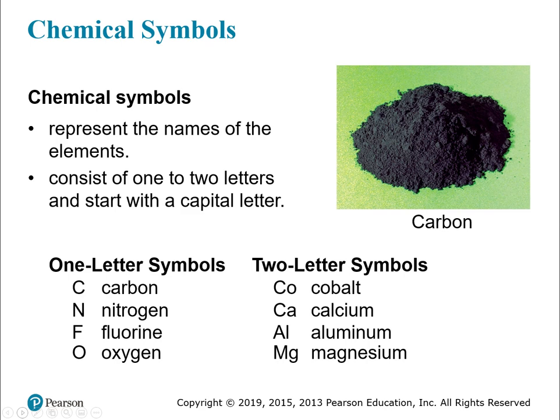The chemical symbols represent the names of the elements and there's either a one-letter or a two-letter symbol. In either case, the first letter is going to be capitalized. If there are two letters, the second letter is lowercase. Here are some examples: one-letter symbols like carbon and nitrogen, and two-letter symbols like cobalt and calcium — notice how the 'o' in cobalt and the 'a' in calcium are lowercase.